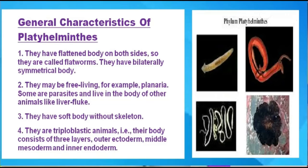Third, they have a soft body without a skeleton. They are triploblastic animals, meaning their body consists of three layers: the outer ectoderm, the middle mesoderm, and the inner endoderm.